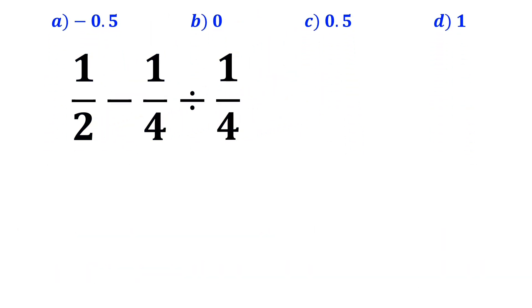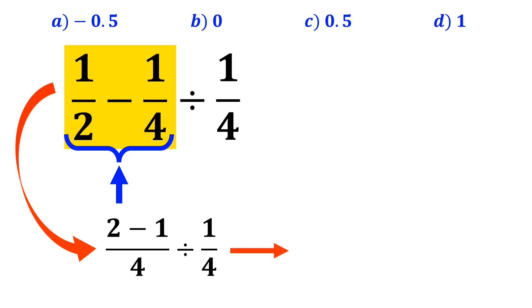Many people when trying to solve this question immediately go for the expression one-half minus one-fourth, which I've highlighted in yellow. They quickly find a common denominator and rewrite this expression as two minus one over four divided by one-fourth, which simplifies to one-fourth divided by one-fourth.